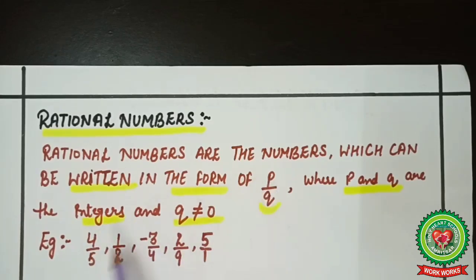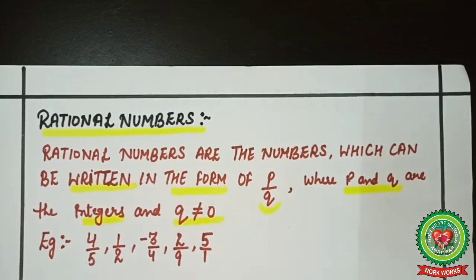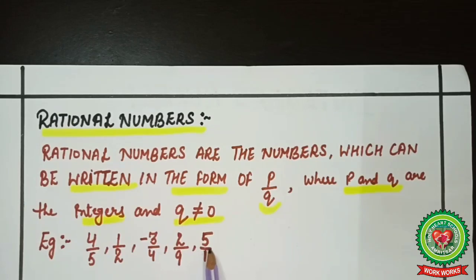For example, four upon five — here four is in the place of p and five is in the place of q, so it is in the form of p/q and is called a rational number. Similarly, 1/2, -3/4, and 2/9 are examples of rational numbers. Also, five is a rational number because we can write it as 5/1.